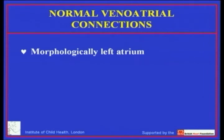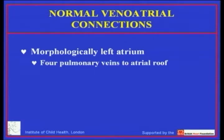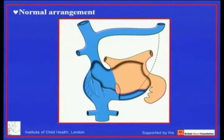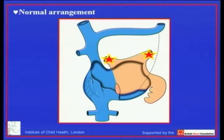Moving on to the left side of the heart, the normal veno-atrial connections have the four pulmonary veins draining into the roof of the morphologically left atrium. Malformations of the pulmonary veins are easier to understand than on the right side — or rather, the list is less extensive. The normal arrangement has veins draining the right lung and the left lung to the dome of the left atrium.